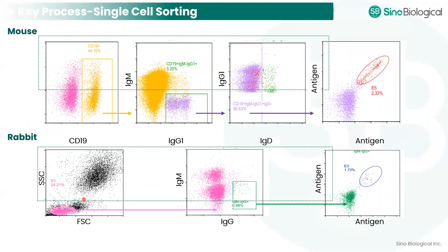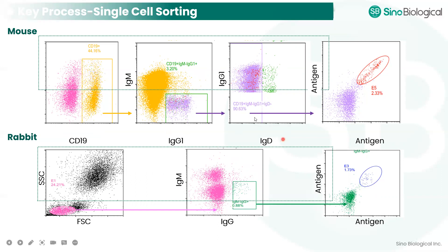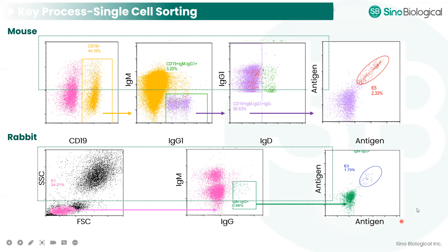There are several key parts involved in single B cell sorting. For mice, available B cell markers such as CD19 antibodies allow easy isolation of single B cells. We use IgG markers to positively select cells and IgM and IgD to negatively select. We can also use antigens to obtain antigen-specific single B cells. For rabbits, fewer B cell markers are available, so we can only use IgG and IgM markers to select for IgG-positive rabbit B cells, followed by antigen-specific targeting.